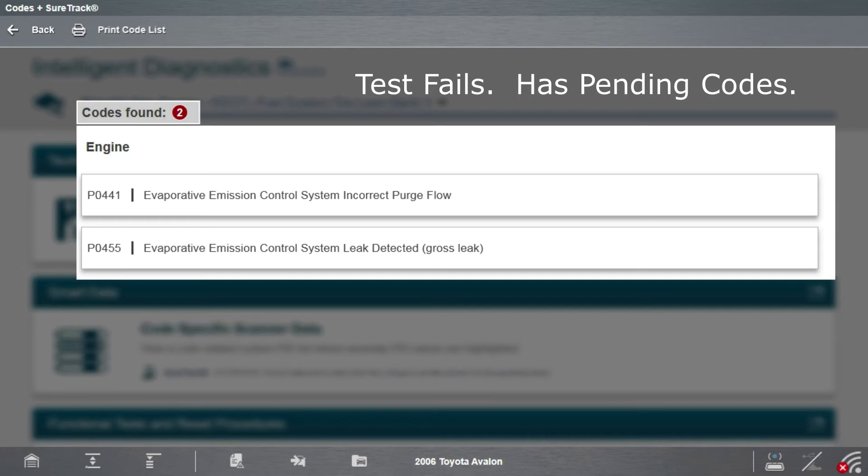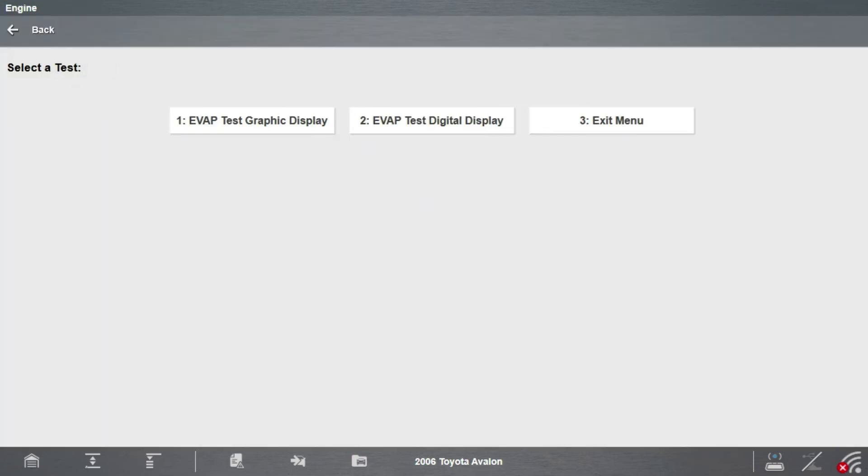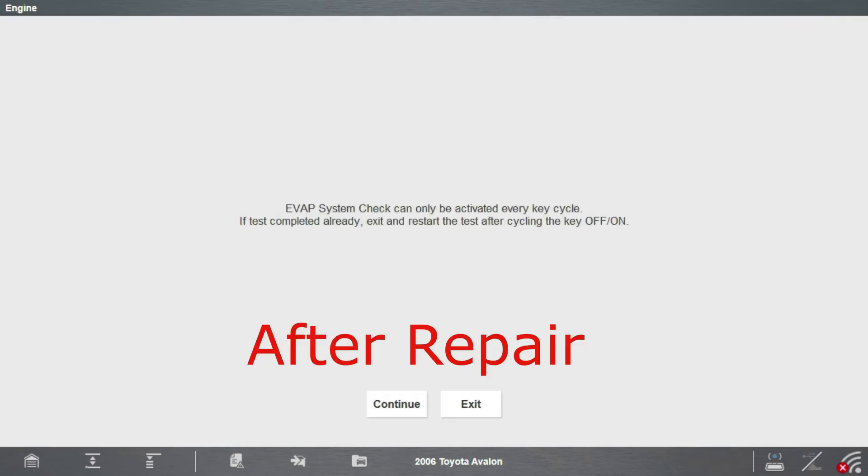Now go check for pending codes to know if there's anything wrong, did the system pass or fail. Notice I got a P0441, not a 1441, a purge valve flow and a gross leak code.